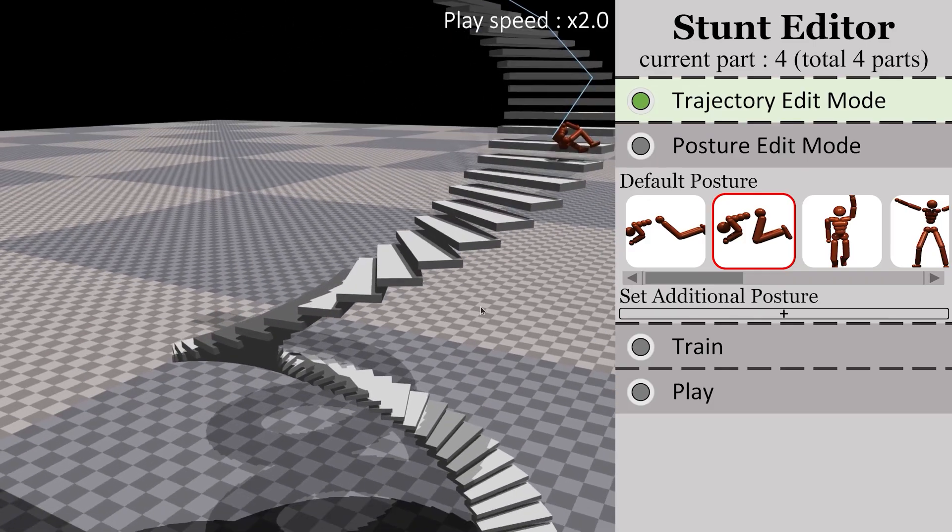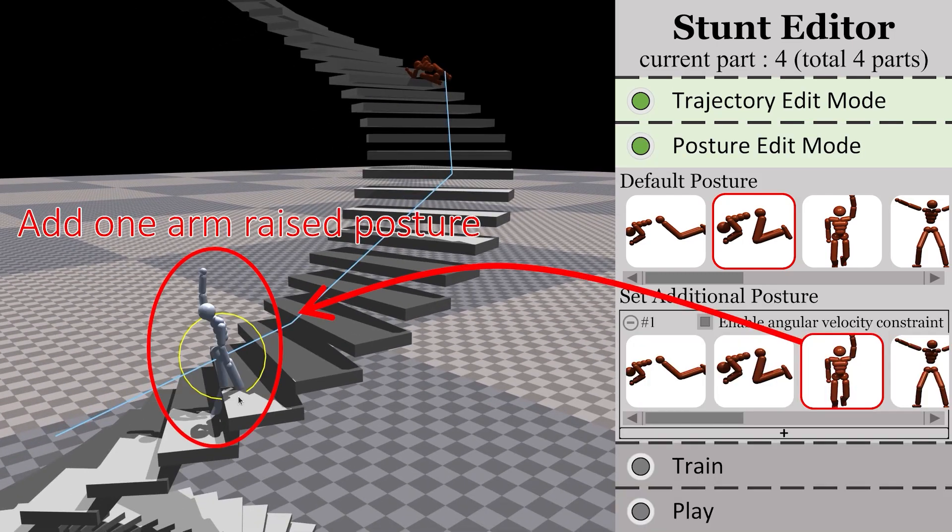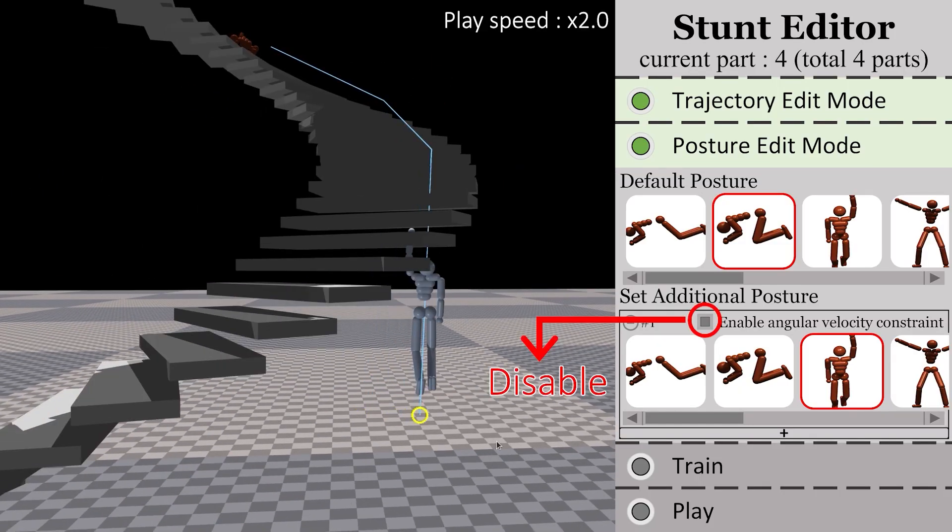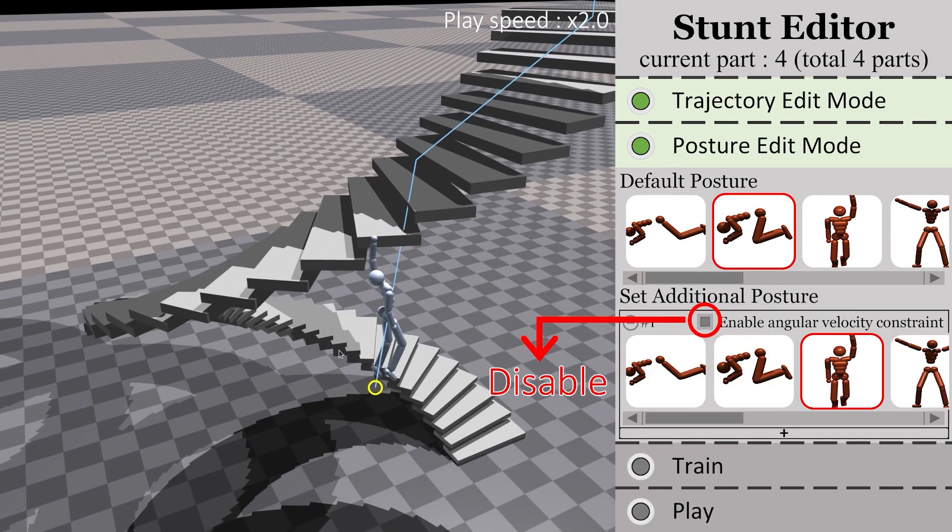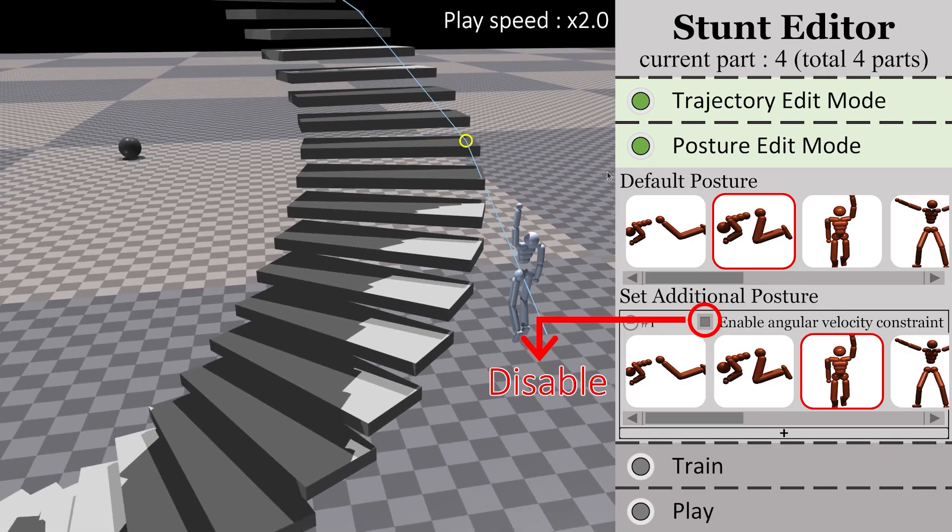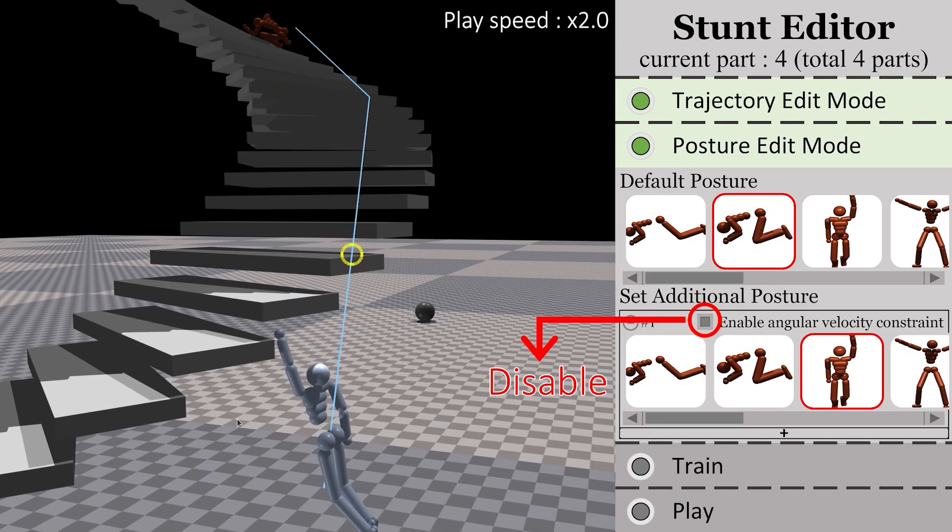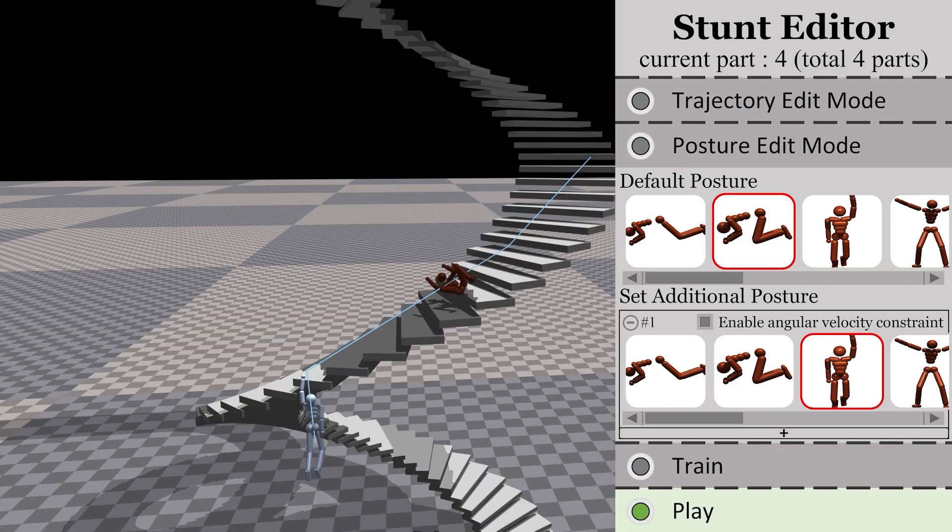In the final part, the stunt actor falls off the stairs while grabbing onto a step. To achieve this, a posture with one arm raised is added as a constraint, and we adjust its orientation appropriately to ensure it appears natural. Since the angular velocity constraint is unnecessary when the actor is holding onto a step, we disable it. To help the actor grip the step, we connect a spring between the left hand and the step. Now the entire scene is created. Let's review the entire sequence.